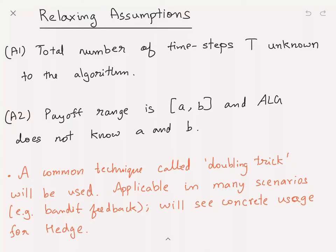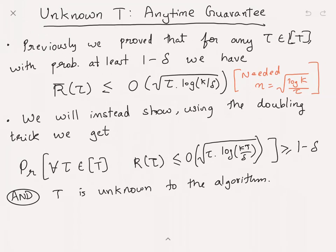These assumptions are easy to handle even if they don't hold, using the doubling trick. Importantly, this doubling trick is applied in many scenarios — for instance, it's also applicable to all the bandit algorithms we will see. So the doubling trick is a fairly general strategy which you might want to try.